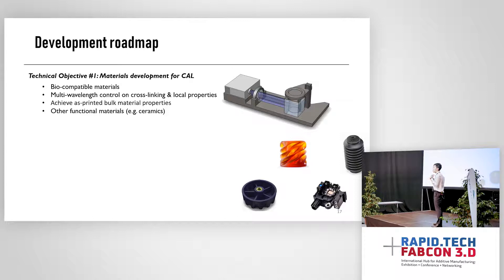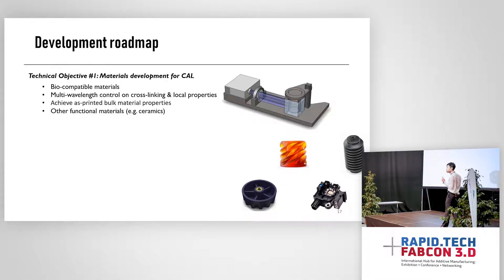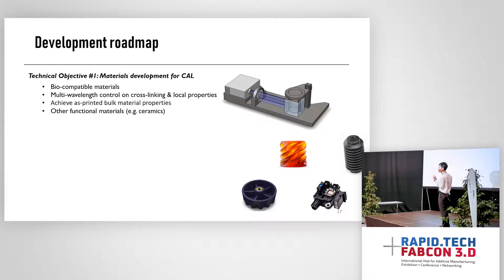How are we going to push this forward? On the material side, we are developing biocompatible materials for bioprinting. In terms of geometrical control, we want to achieve multi-wavelength control for more control over cross-linking and local properties. In the future, we may beat the diffraction limits for even finer features or print functionally graded materials. We also want to achieve bulk material properties so you get an end-use part without any post-curing. We are also interested in printing functional materials like ceramics.